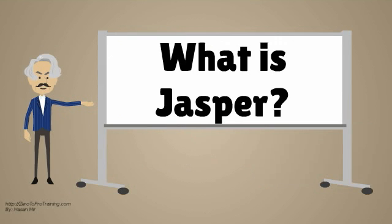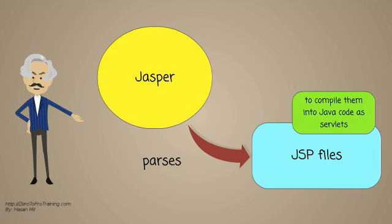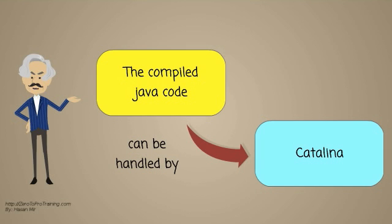What is Jasper? Jasper is Tomcat's JSP engine. Jasper parses JSP files to compile them into Java code, as servlets. The compiled Java code can be handled by Catalina.